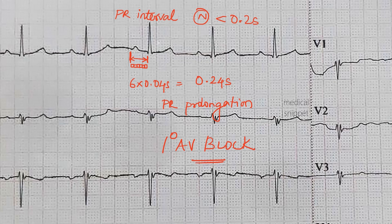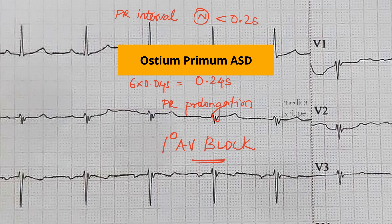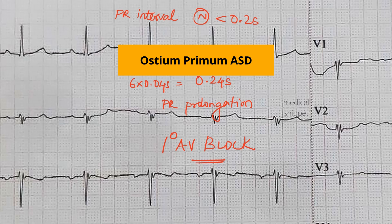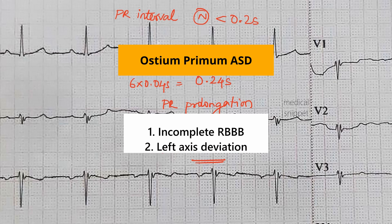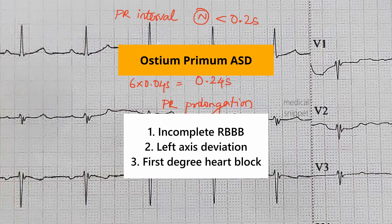So in ostium primum ASD there is incomplete right bundle branch block, left axis deviation, and first degree heart block.